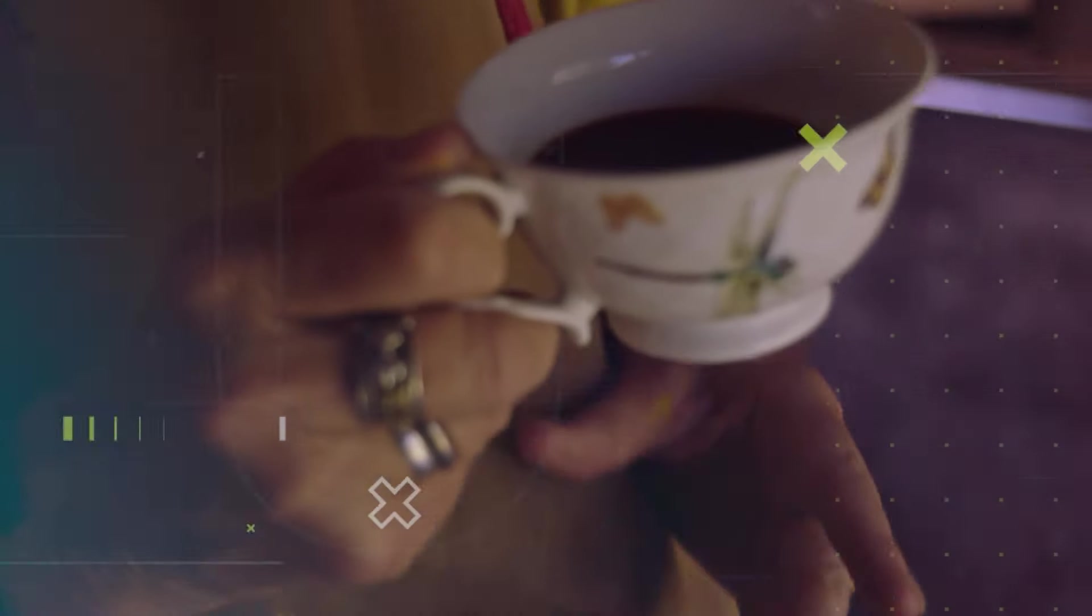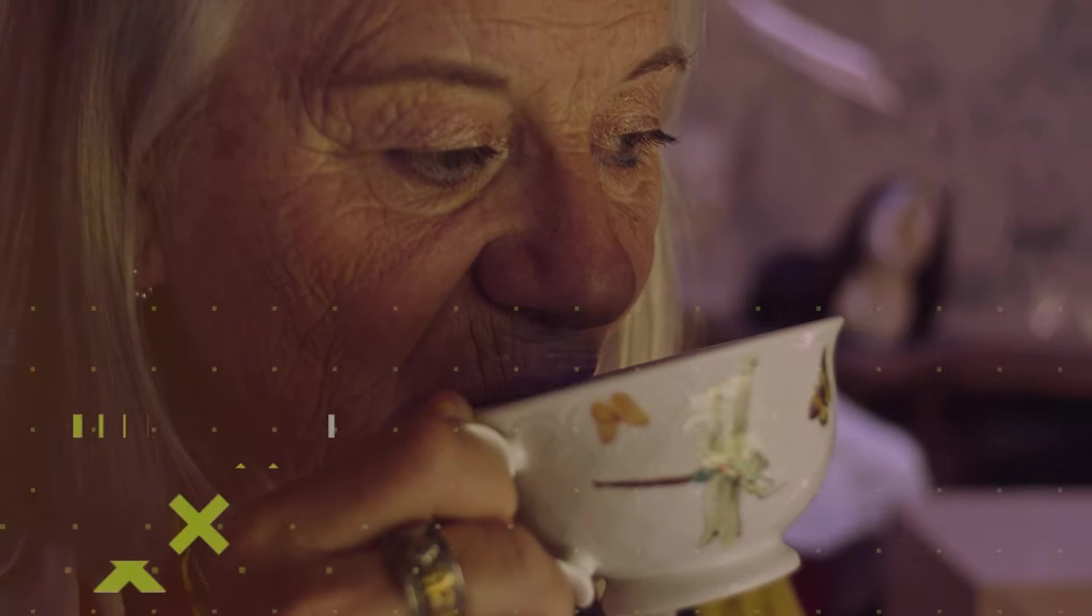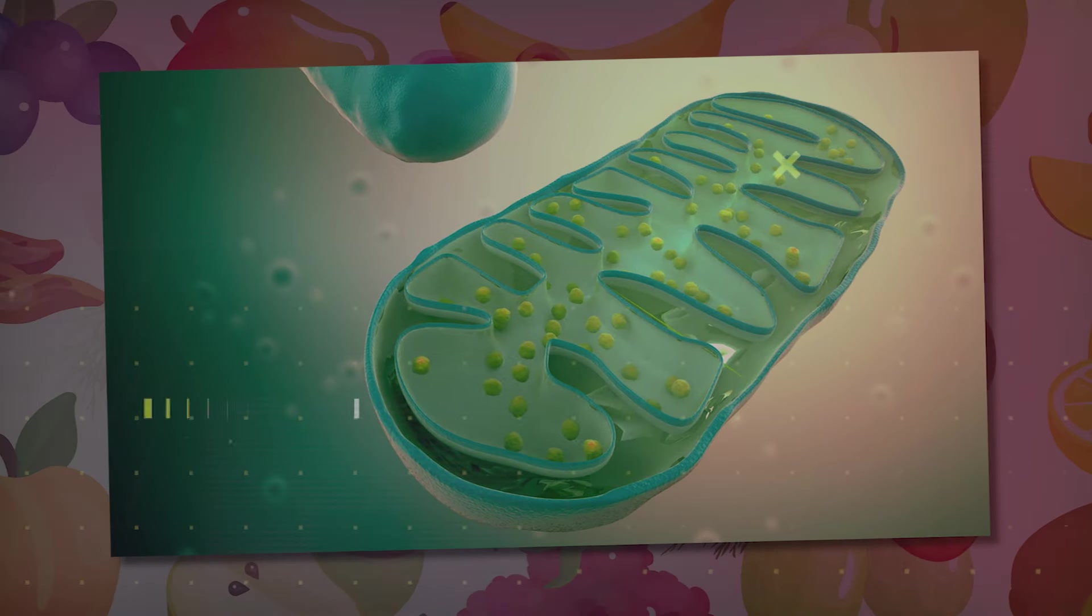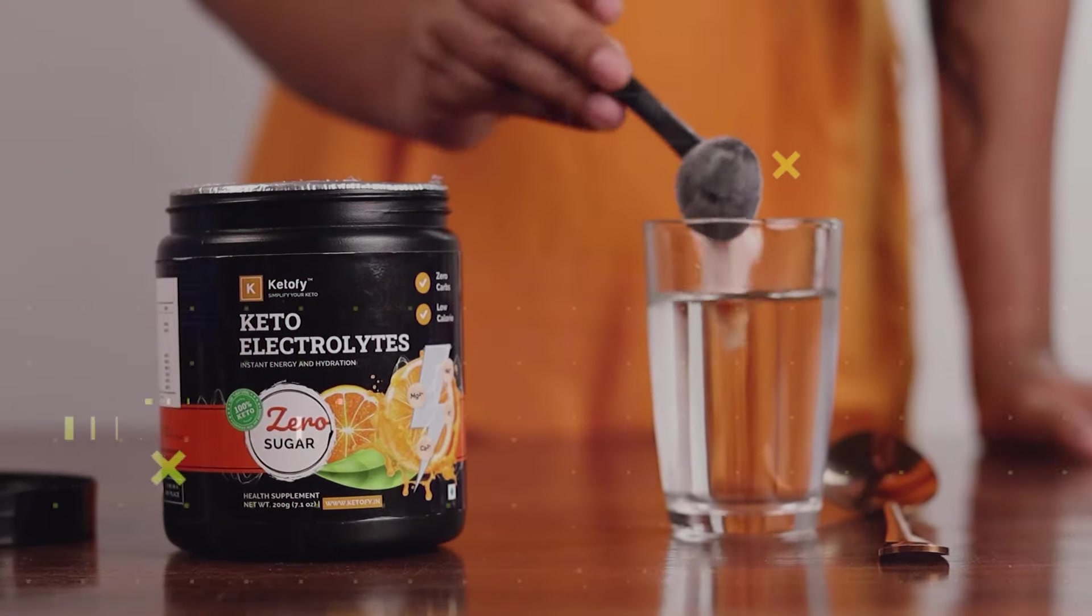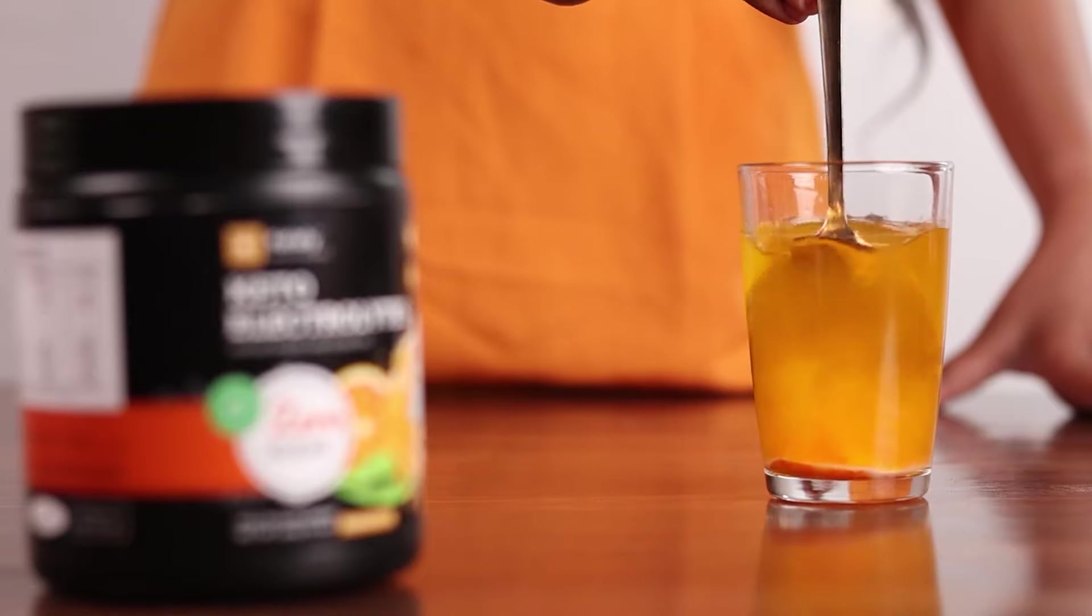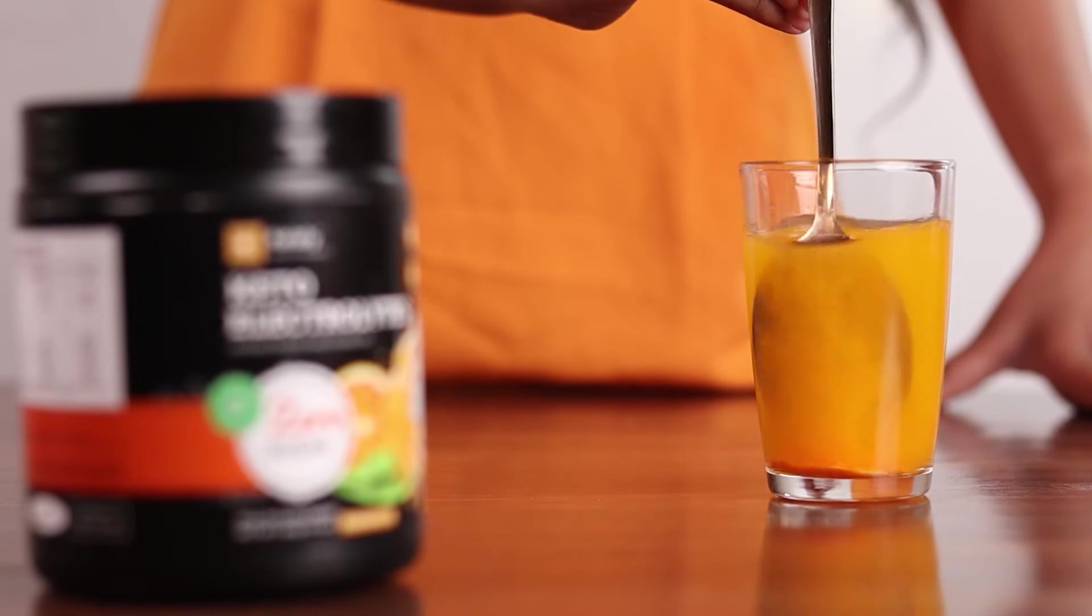The body becomes overstimulated when consumed in excess of coffee, soda, caffeine, and sugar, which alters how cells produce energy. Start taking one scoop of a premium keto electrolyte powder dissolved in a bottle of carbonated water twice daily to correct this and naturally increase your energy levels without the use of stimulants.